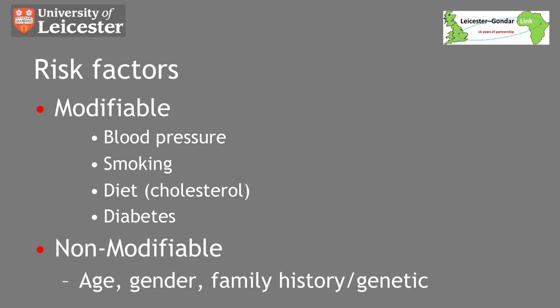Atherosclerosis is inevitable as we age, and the pathological process occurs in all from early adult life. However, if we recognise the factors that contribute to its development, we can appreciate ways in which to slow progression. The main modifiable risk factors include hypertension, smoking, cholesterol and diabetes. The factors we cannot influence are increasing age, male gender, family history and genetic composition.